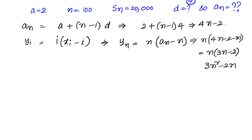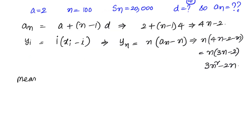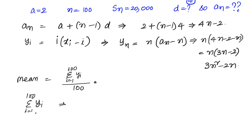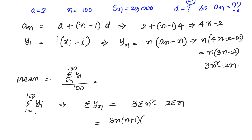Once we know the nth term of the series, we want to find the sum of n terms. The mean will be the sum divided by 100. To find the sum Sn of the yi sequence, we apply sigma: 3 into sigma n squared minus 2 into sigma n. The formula for sigma n squared is n into n plus 1 into 2n plus 1 by 6, and sigma n equals n into n plus 1 by 2.